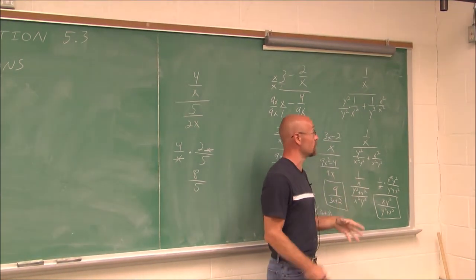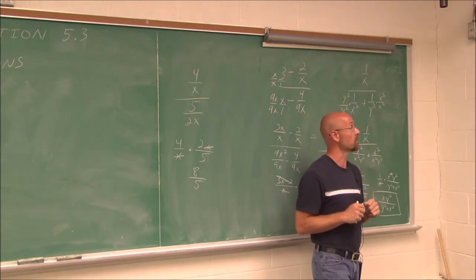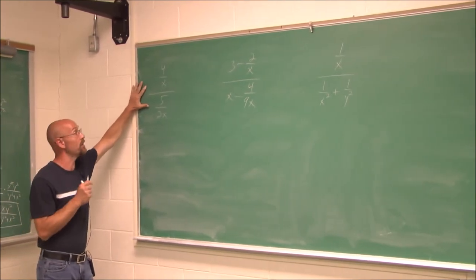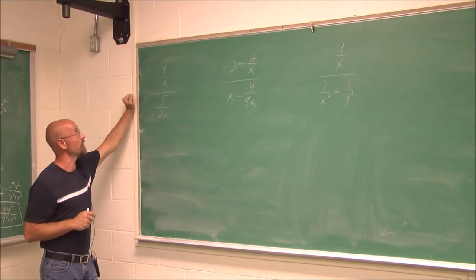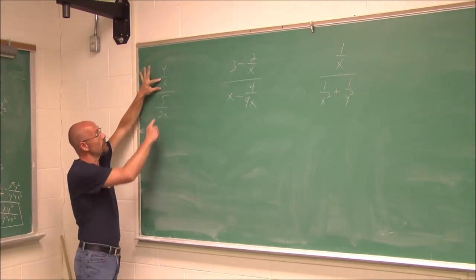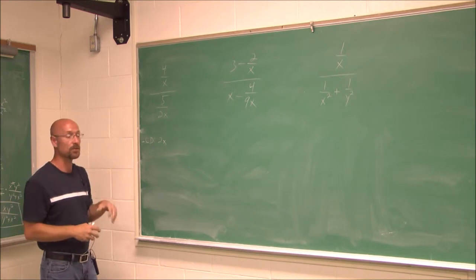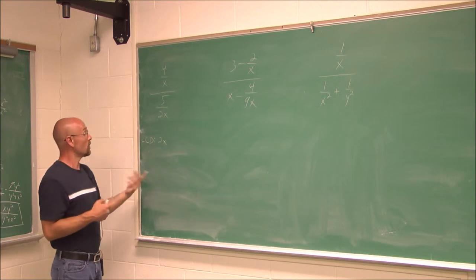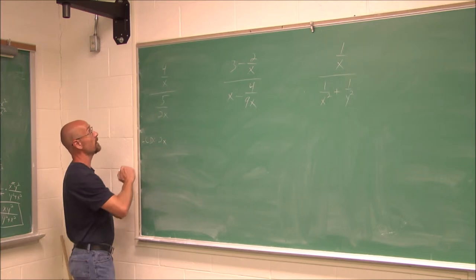So that was method 1 — simplify numerator and denominator to single fractions, then multiply by the reciprocal. Method 2: we're going to look at these same three examples. Method 2 simply says find the LCD of all the fractions involved. For this example, the denominators are x and 2x, so the LCD is 2x — they each contain an x, but we also need that factor of 2.